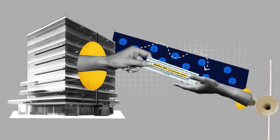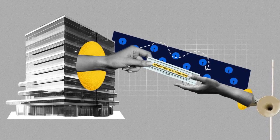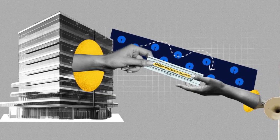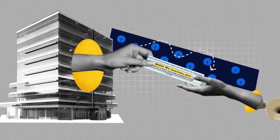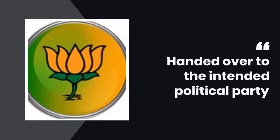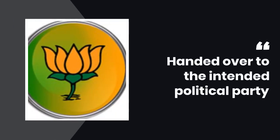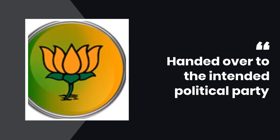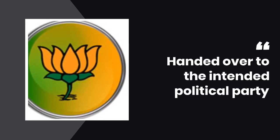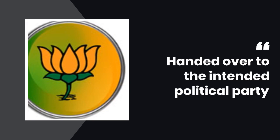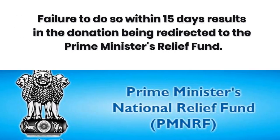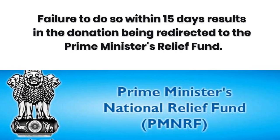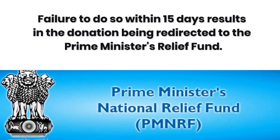Donors purchase electoral bonds during specified periods throughout the year from authorized banks. Once acquired, these bonds are handed over to the intended political party, which then encashes them within a limited time frame through a designated bank account. Failure to do so within 15 days results in the donation being redirected to the Prime Minister's Relief Fund.